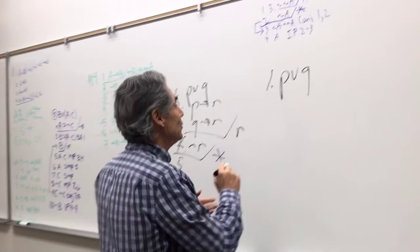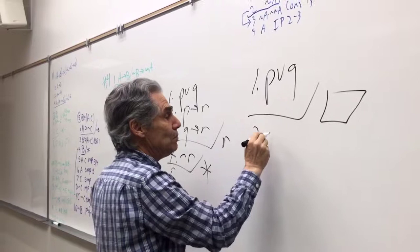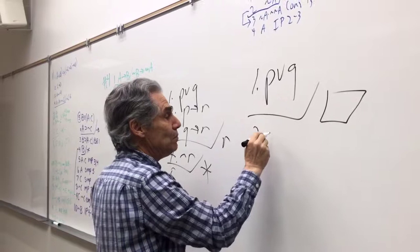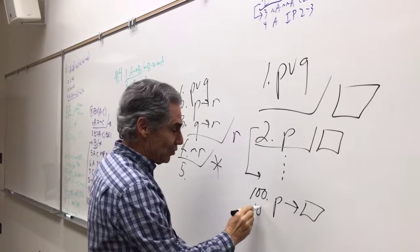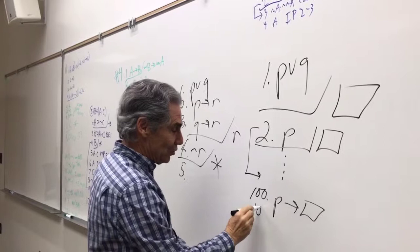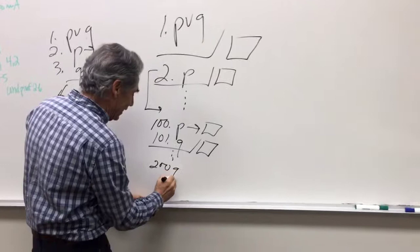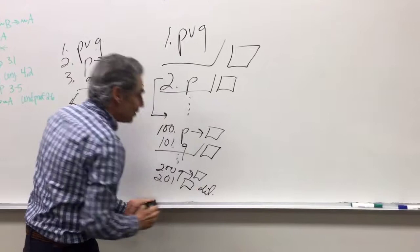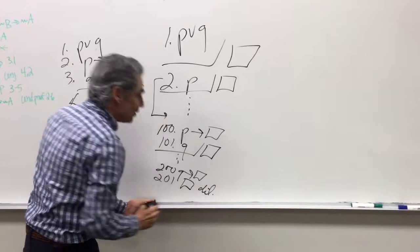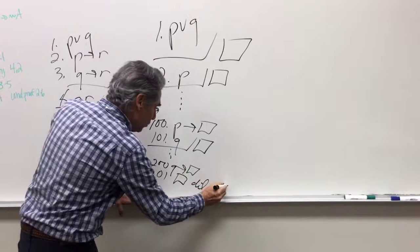This is called proof by cases. If I've got P or Q and I'm trying to show some conclusion, I assume P and show that conclusion — say at line 100 I finally get P then box by conditional proof. Then at line 101 I assume Q and try to show the same conclusion. I go down to line 200 and get Q arrow box. Then line 201 is box by dilemma, which uses lines 1, 101, and 200. That's proof by cases.